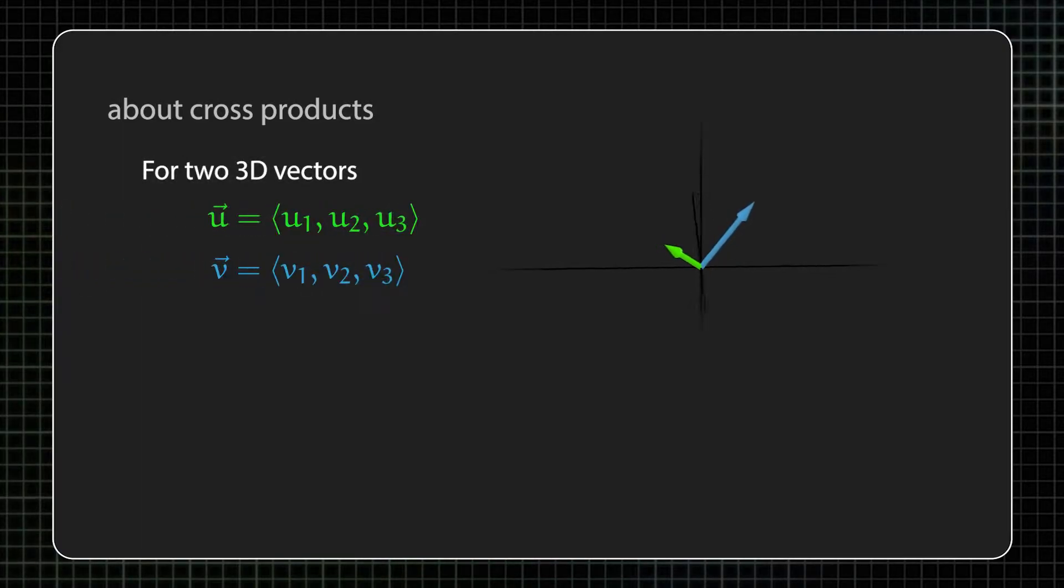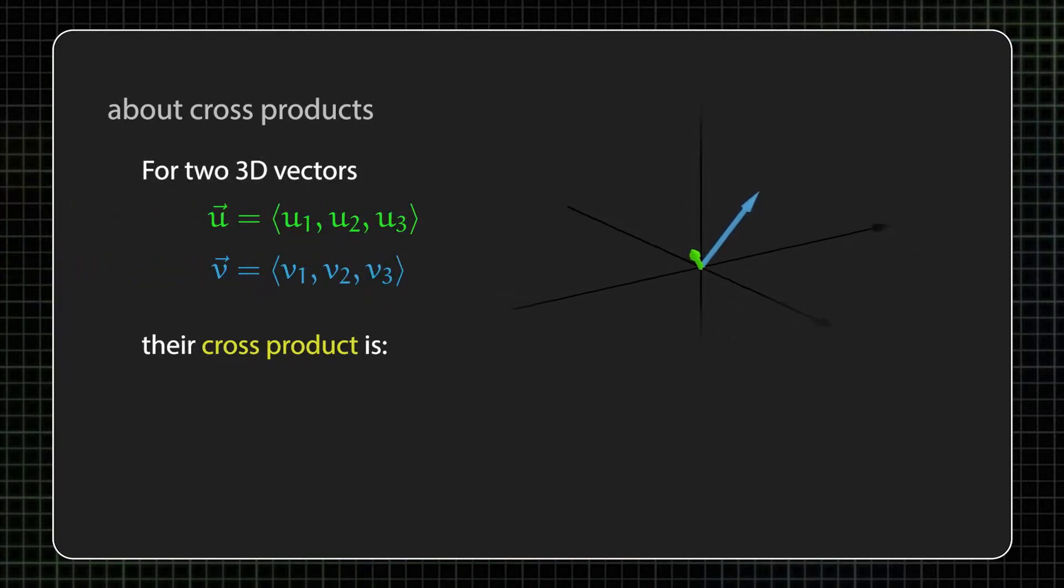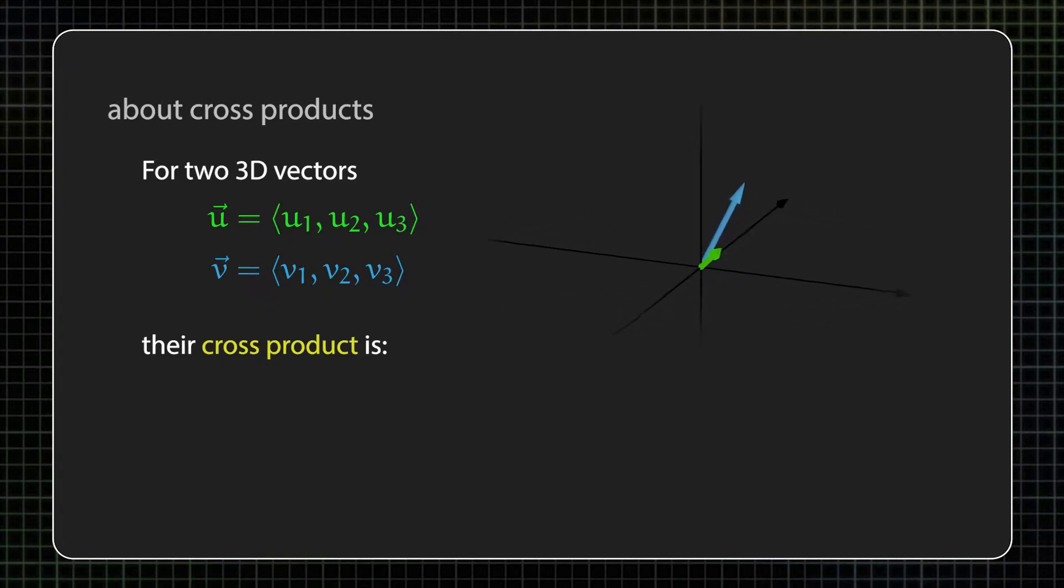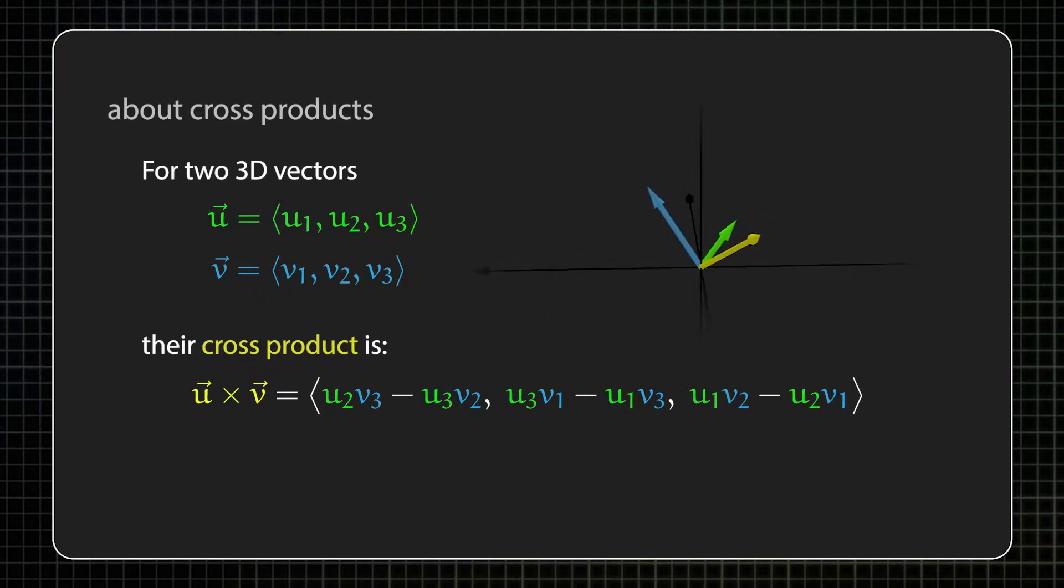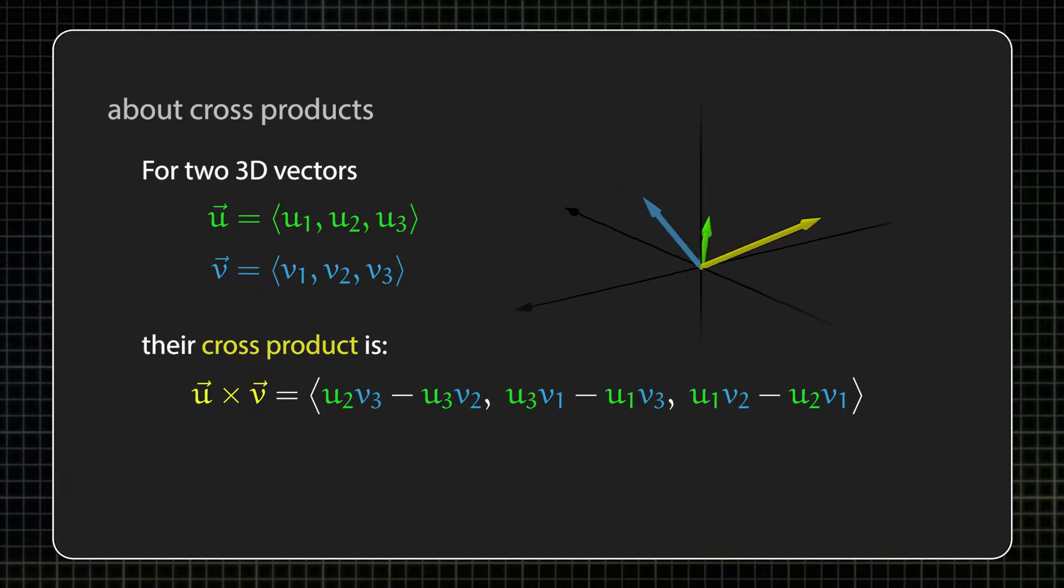Let's start with some background info so that we're all on the same page. If we have two three-dimensional vectors, u and v, then their cross product is another 3D vector that's calculated like this. Now, this is a pretty weird formula, and I never recommend that anyone actually memorize it.